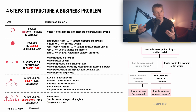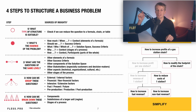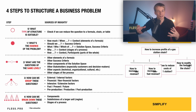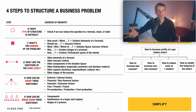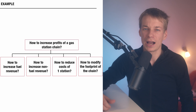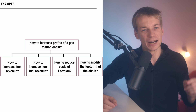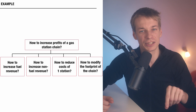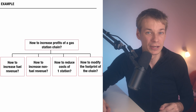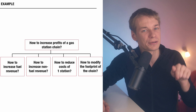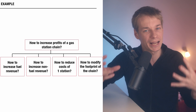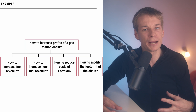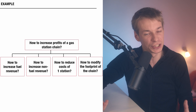Finally, simplify. With a comprehensive and messy issue tree in place, the next step is to streamline it for clarity and ease of communication — eliminate any superfluous elements. And there you have it: a refined top-level issue tree akin to what was used in a McKinsey engagement by one of my former colleagues. This structured approach not only clarifies the problem at hand, but also paves the way for strategic solutions.